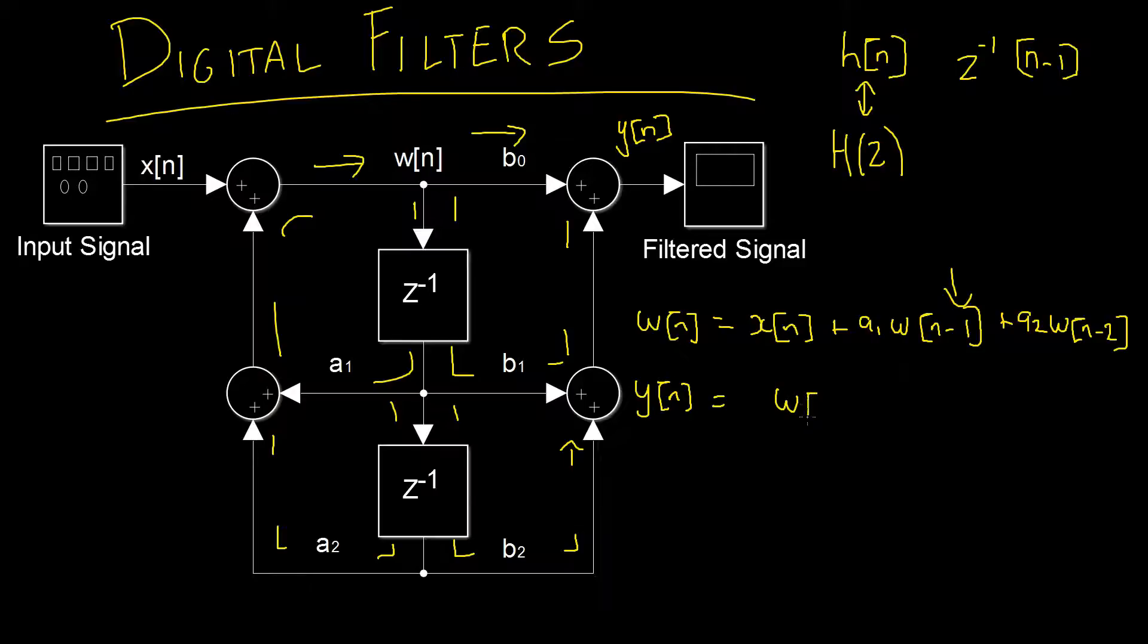We have w of n and then that's scaled by b0, or b0, however you want to say it. Then we have plus w of n, and this time we're delayed by 1, and then that's scaled by b1, plus our last loop, w of n with a two sample delay, and then that's scaled by b2. Okay, so we have our two equations, 1 and 2.